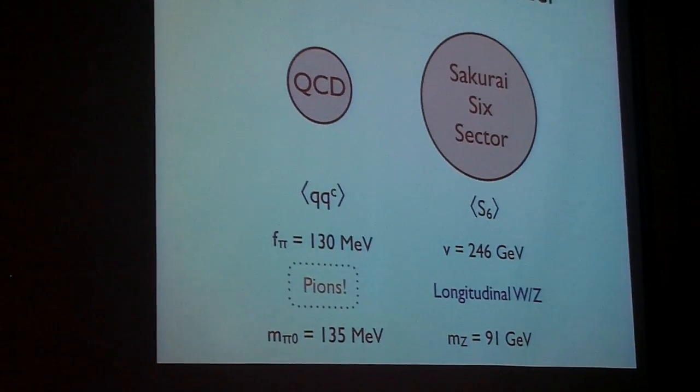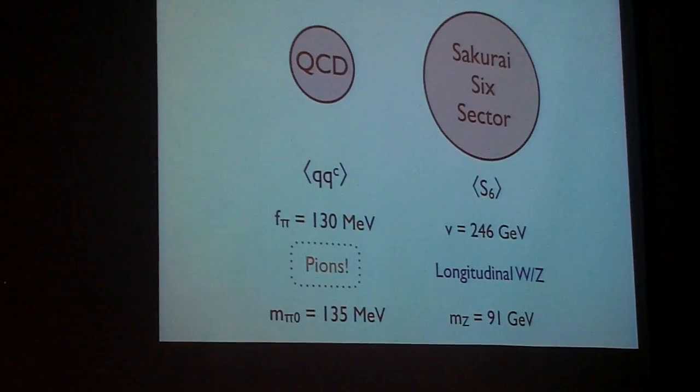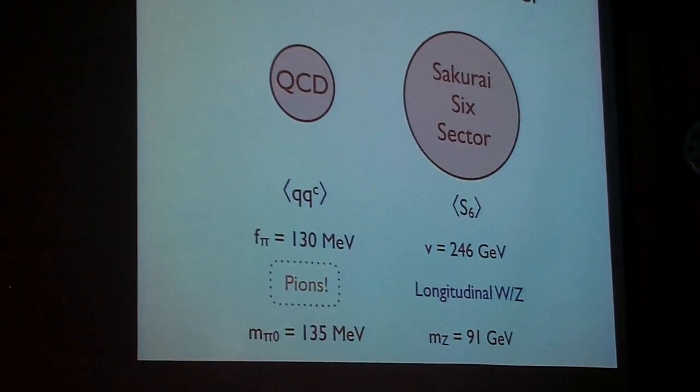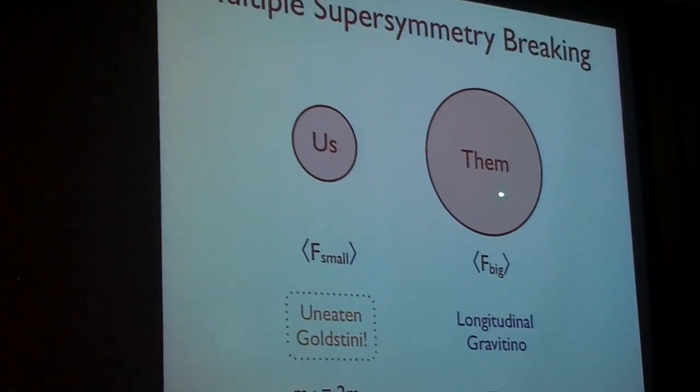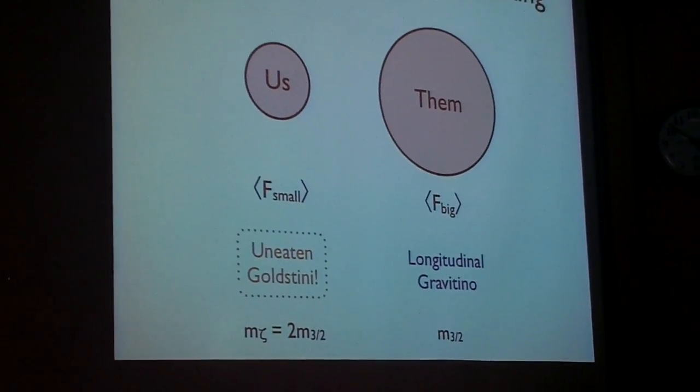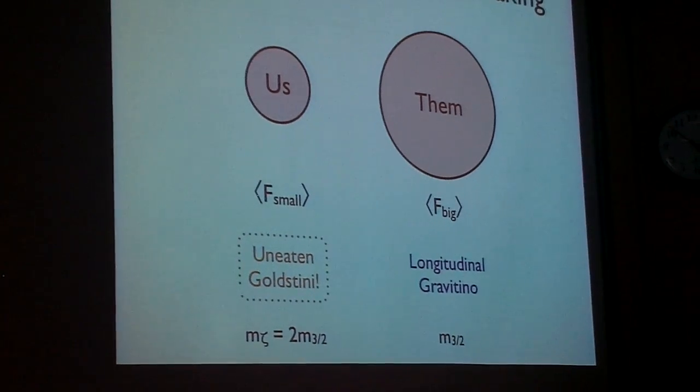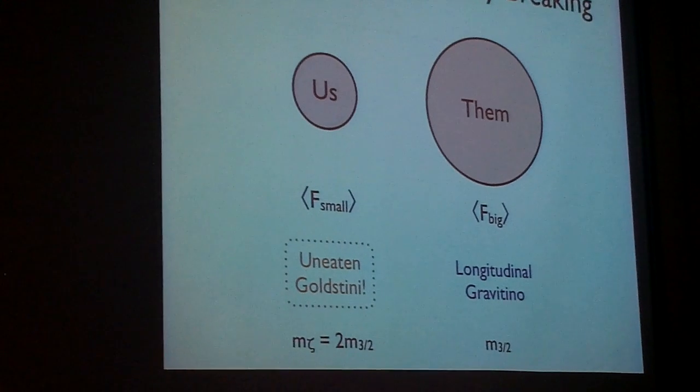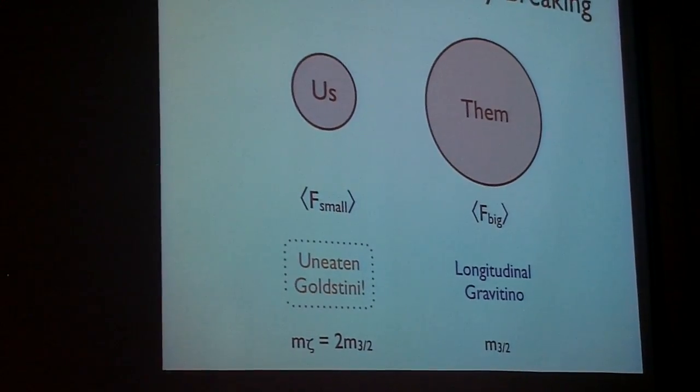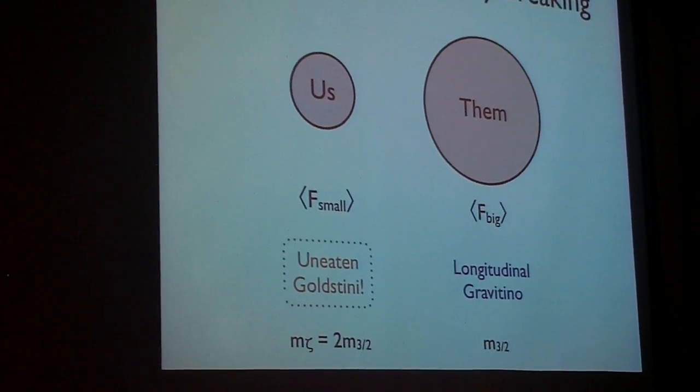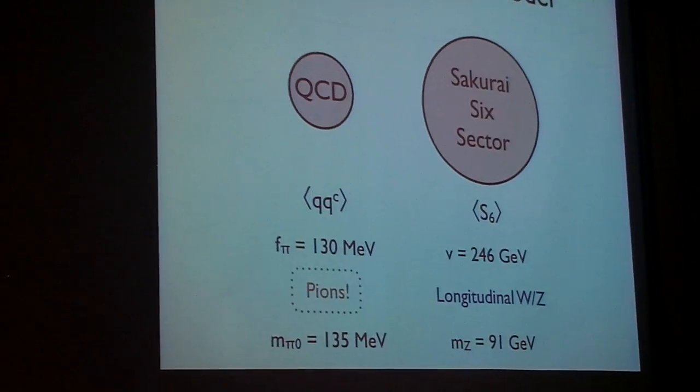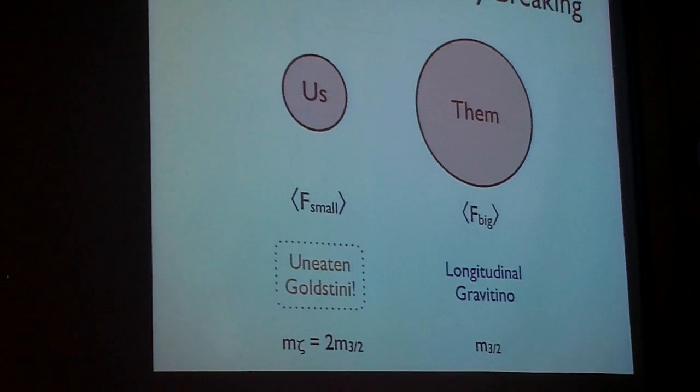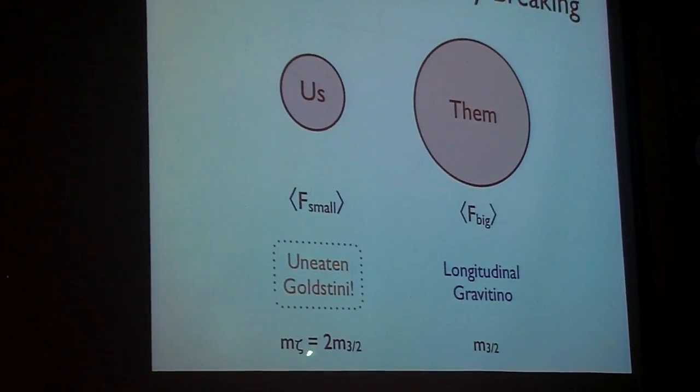So if you break a symmetry multiple times, you get extra light states. That's not a surprise. The surprise is, in this gauge theory example, the pions are much, much lighter than the W Z boson. In this supersymmetric example with us and them, let's say they are much better at breaking supersymmetry than we are. Their Goldstino gets eaten to form the longitudinal components of the Gravitino. Our Goldstino remains in the spectrum, but its mass is twice the mass of the other sector. So, whereas in the standard model, the would-be Goldstone modes are lighter than the gauge boson, here, the would-be Goldstino modes are heavier by a factor of two.